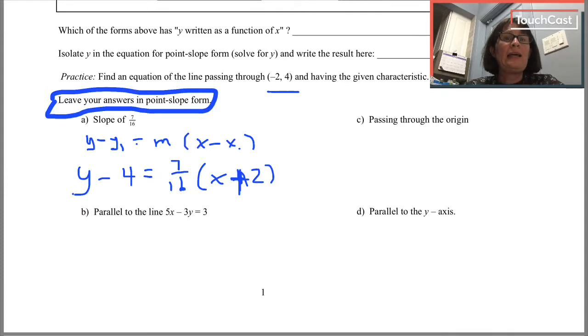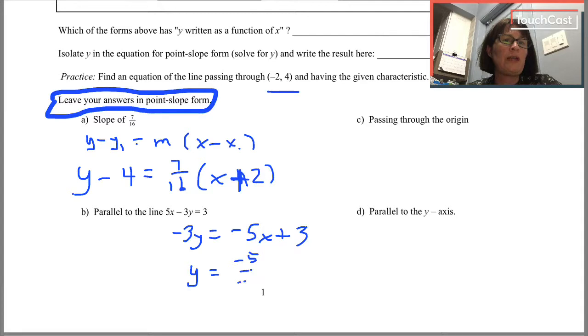So, no trick. For letter B, if I want to write a line parallel to this one, I'm going to have to figure out the slope of this line. I'm going to isolate the y. So I'm going to subtract 5x from both sides. It leaves me negative 3y equals negative 5x plus 3. I'm going to divide every term in that equation by negative 3 to get y equals negative 5 over negative 3x. This positive 3 is going to get divided by negative 3. It leaves me with negative 1.